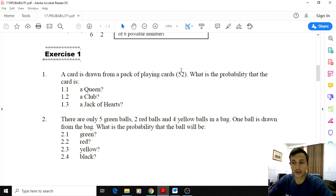So here, a card is drawn from a pack of playing cards. There are 52 cards, we don't include jokers. What is the probability that the card is a queen? So how many queens are there in a pack? There are four queens, so four out of 52.